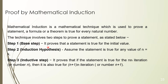In the base step, we have to prove that the given statement is true for the basic initial value — either 0 or 1. In the induction hypothesis, we have to assume that the statement is true for any value of n equal to k, meaning we replace the variable n with k. In the induction step, we have to prove that the same given statement is true for the n+1th iteration by using the induction hypothesis.